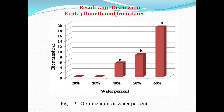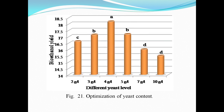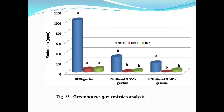For dates biomass, bioethanol yield increased with different pH values, with the highest at pH 5.8, and the highest yeast level at 4g per liter. Comparing 1%, 5%, and 10% bioethanol blends, sulfur dioxide and carbon dioxide emissions were reduced. Using 5% ethanol with 95% gasoline or 10% ethanol with 90% bioethanol blend means we have saved energy and reduced gas emissions by using at least 5 to 10% of the waste product.